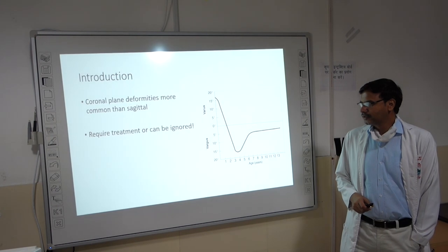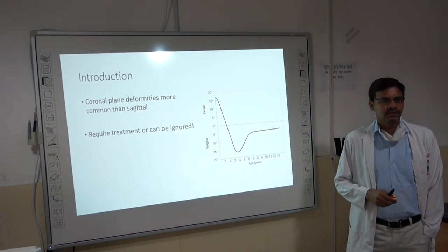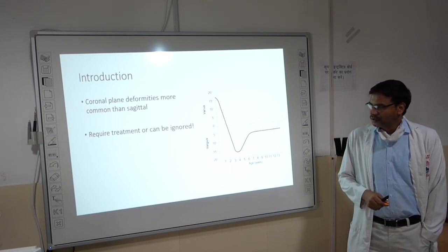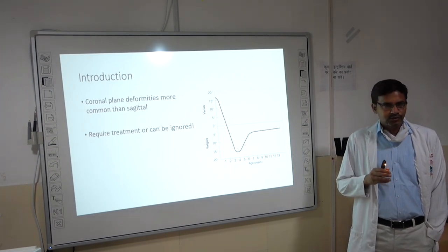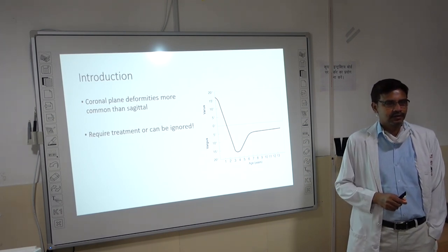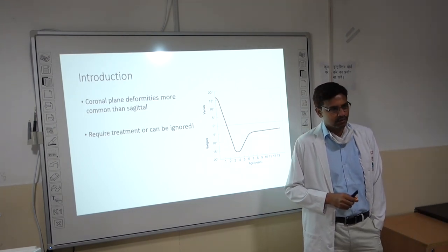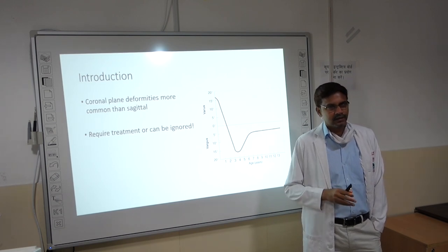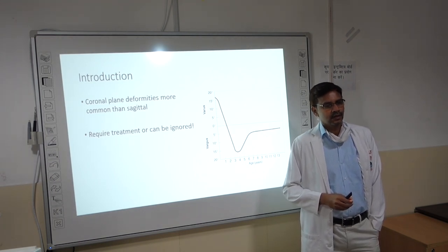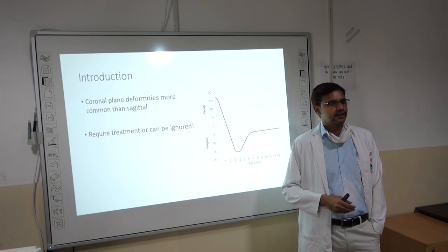The next point to consider is whether these deformities require treatment or can be ignored. If a child comes to you at 3 years of age and the parents say the child has a lot of bowing, you have to decide whether this bowing is physiological or pathological. That is why it is important to know the normal variation and physiological changes with increasing age in the child.